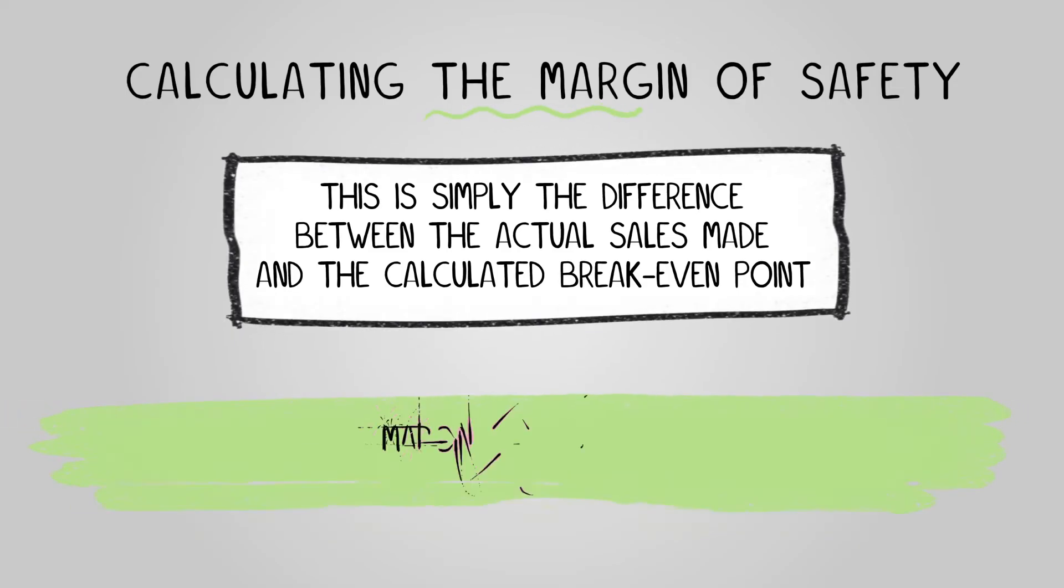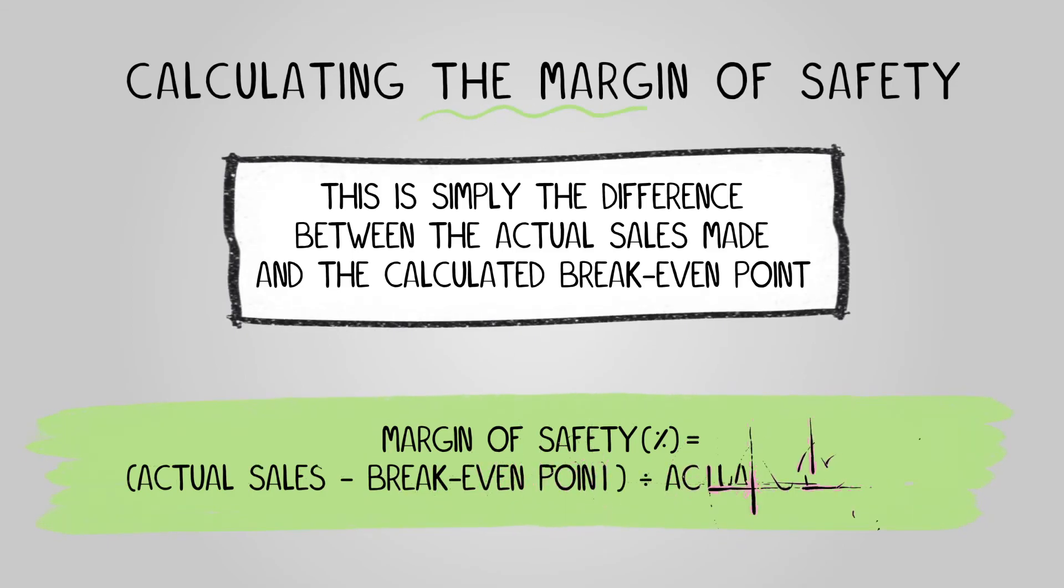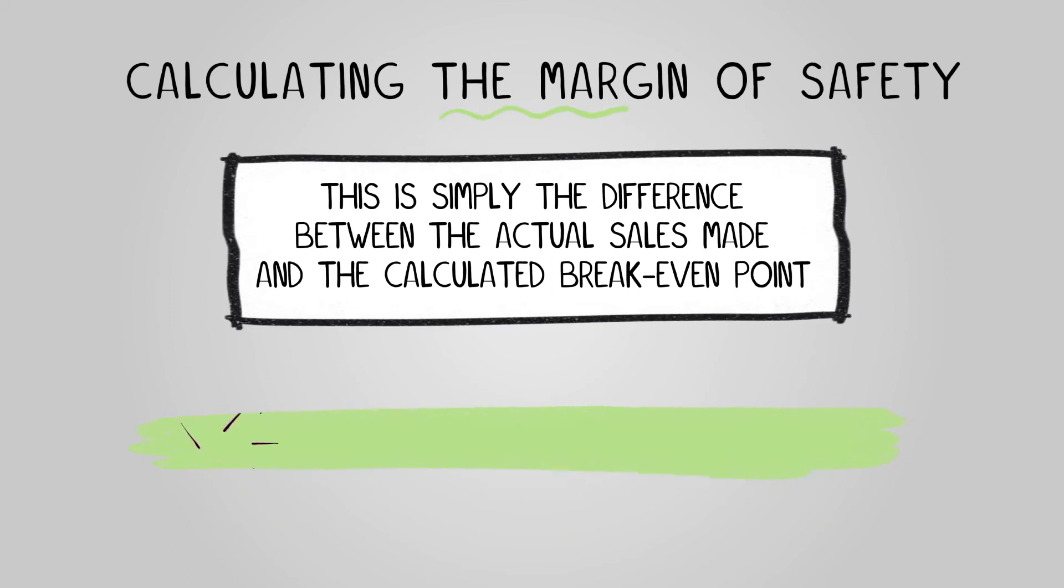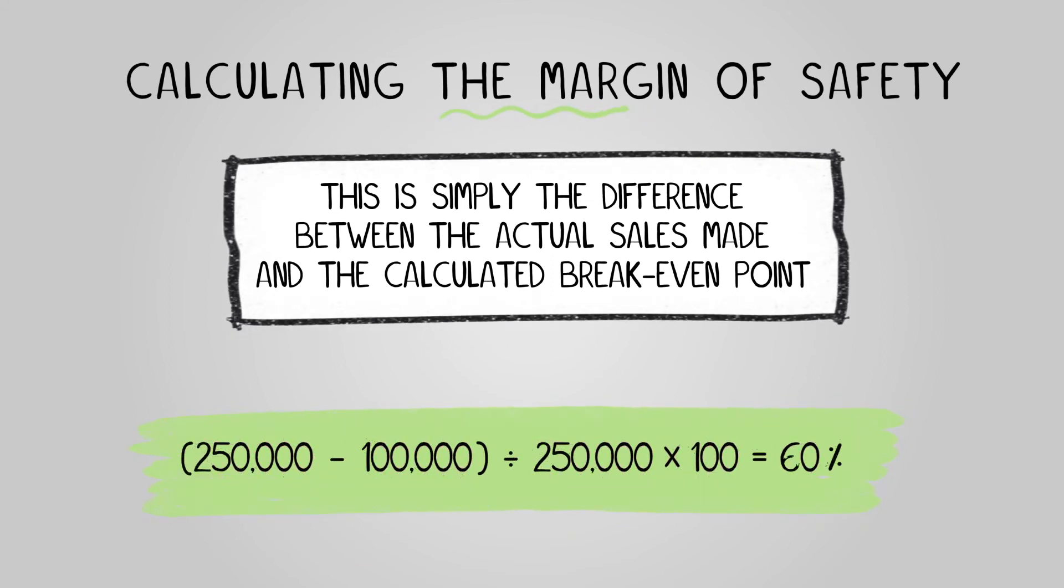Often this is expressed as a percentage using the formula: margin of safety equals actual sales minus the break-even point, divided by the actual sales, multiplied by 100. So our margin of safety is 250,000 minus 100,000, divided by 250,000, multiplied by 100, which equals 60 percent.